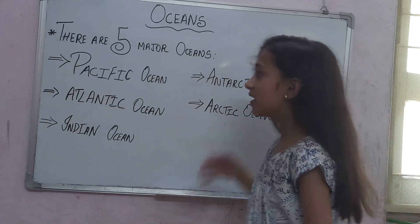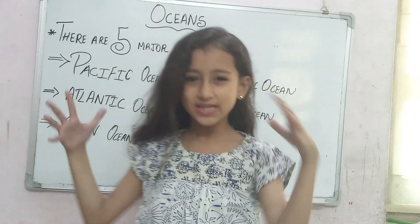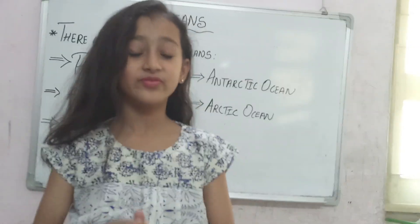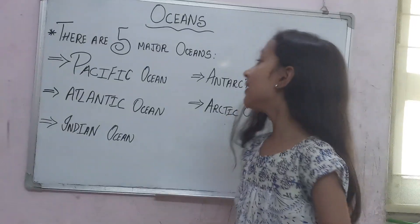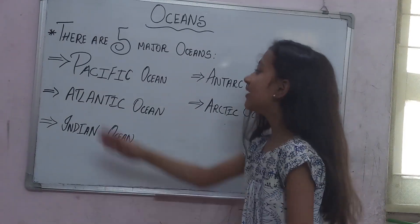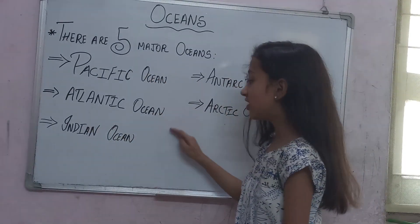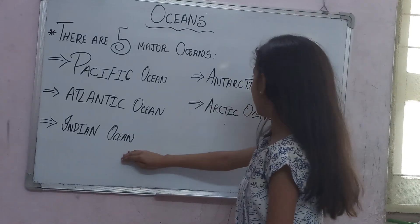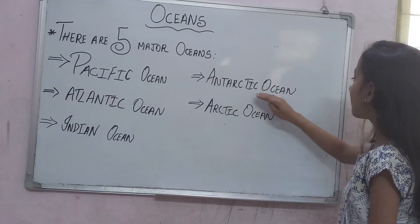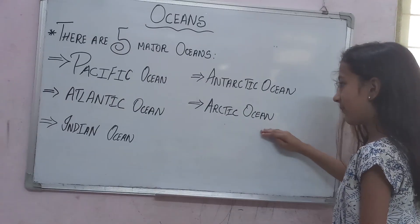Oceans. Basically, what are oceans? Oceans are large and deep bodies of salty or saline water. There are five major oceans: the Pacific Ocean, Atlantic Ocean, Indian Ocean, Antarctic Ocean, and Arctic Ocean.